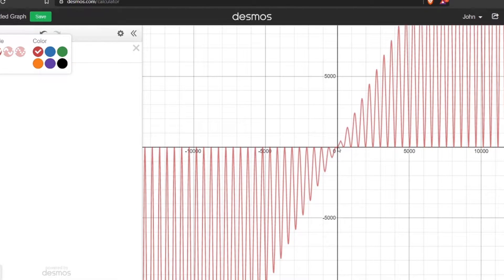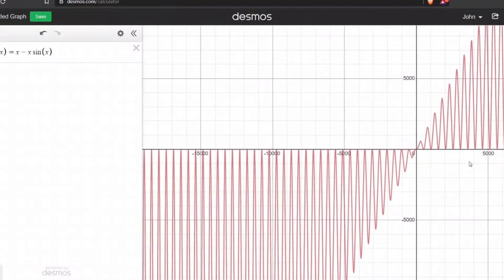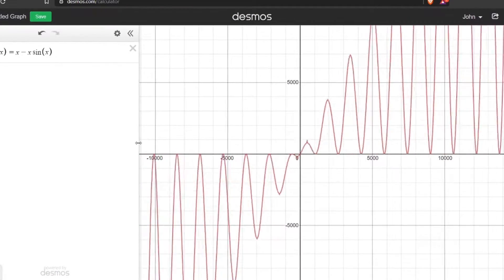Just for one second my graph looked almost like it hadn't zoomed out at all. It still behaved strangely, but it looked completely normal.